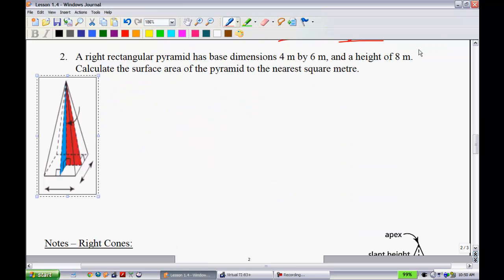Example two: A right rectangular pyramid has base dimensions 4 by 6, so I've added this little pyramid here to give us a hand, so you may want to sketch it if you can. I had a hard time sketching this one, so I kind of cheated. And a height of 8 meters. So meters, meters, meters. I find drawing yourself a picture does help with this one. Calculate the surface area of this pyramid to the nearest square meter. This one's going to be a little bit of work. I'm going to start out with a little note.